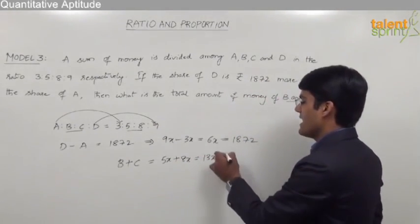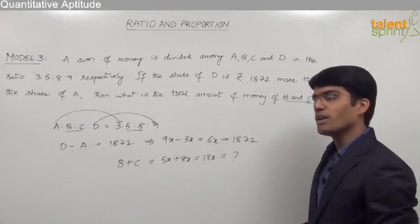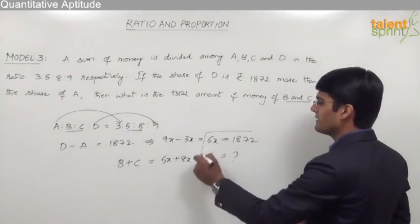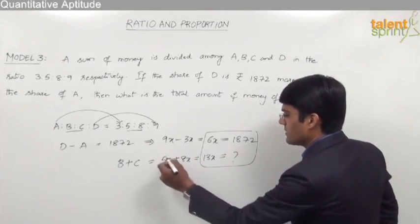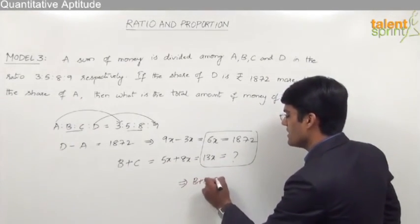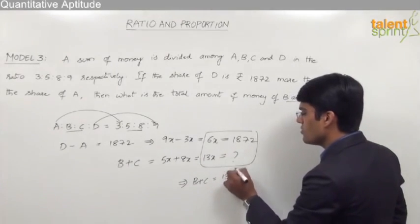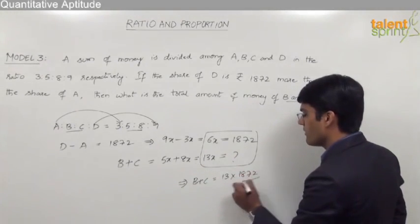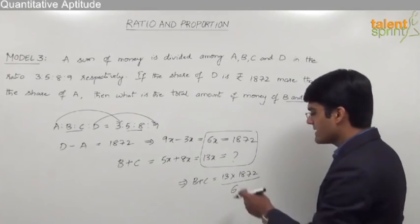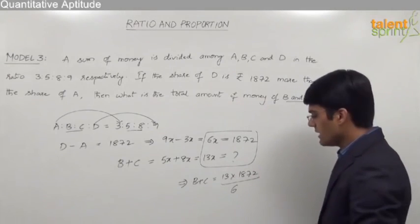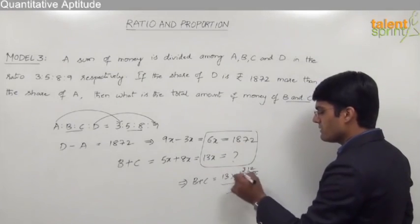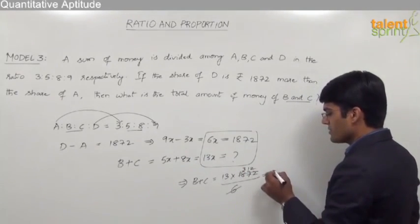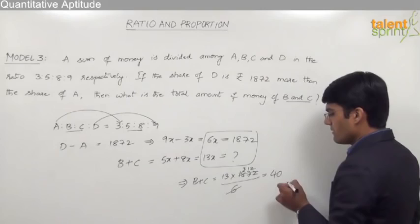So we can say that B plus C together have 5x plus 8x, which is equal to 13x. This has to be calculated. So simply by cross multiplying this part, we can get the answer. The total amount with B and C should be equal to 13 into 1872 divided by 6. By simplifying this, we can get the answer as 312 into 13, which comes out to be 4056.